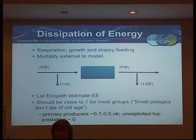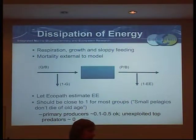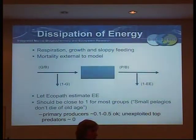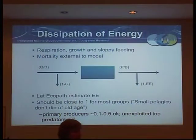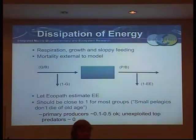Basically, EE should be close to one for most groups. If you think about the middle of the system - the part you're most focused on - it should be fairly close to one. At the bottom, the microbial food web, a lot of that doesn't ever enter the metazoan food web - it gets turned over at the bottom. So those EEs can actually be quite low, because they're just going to the microbes.